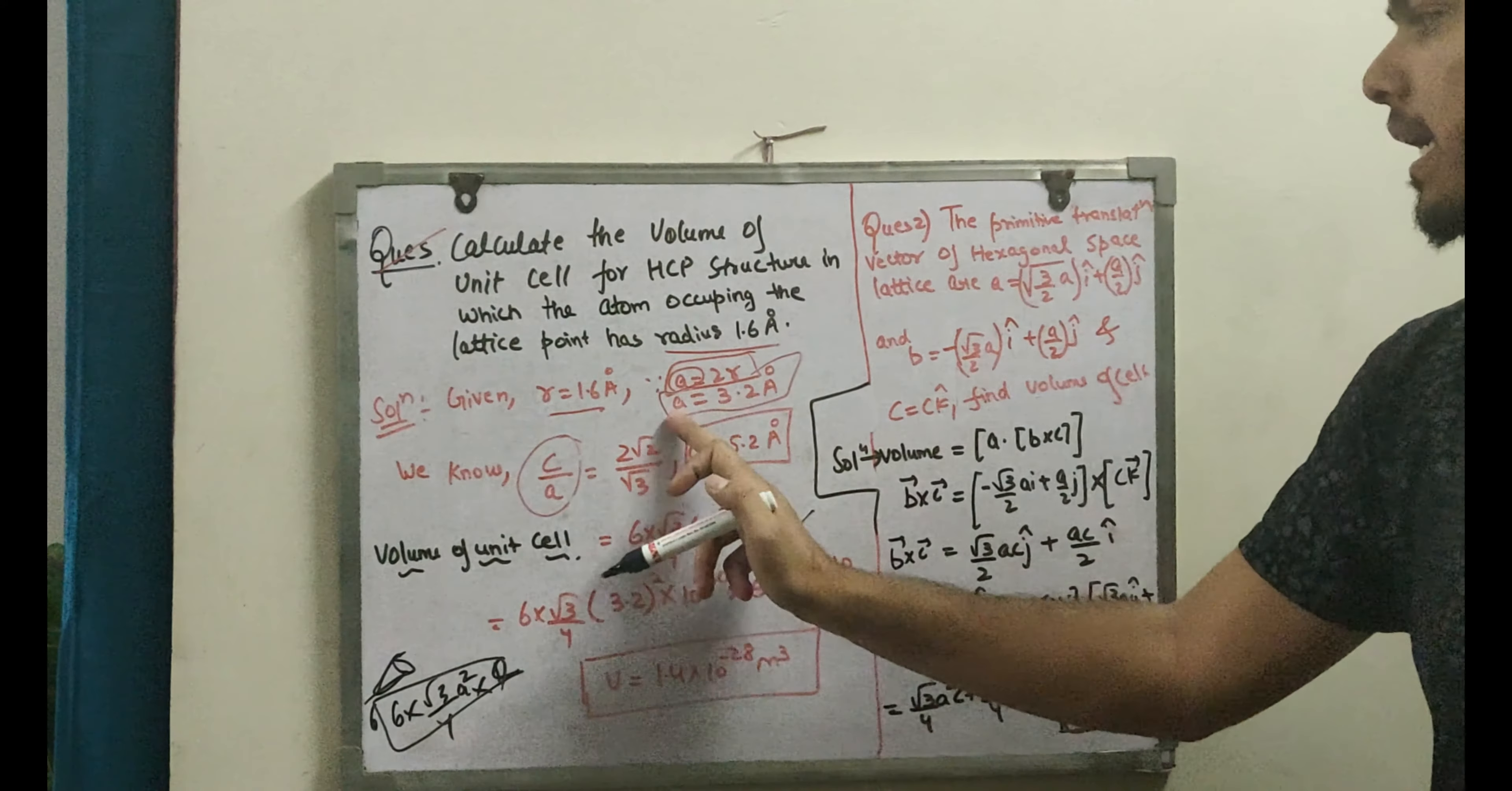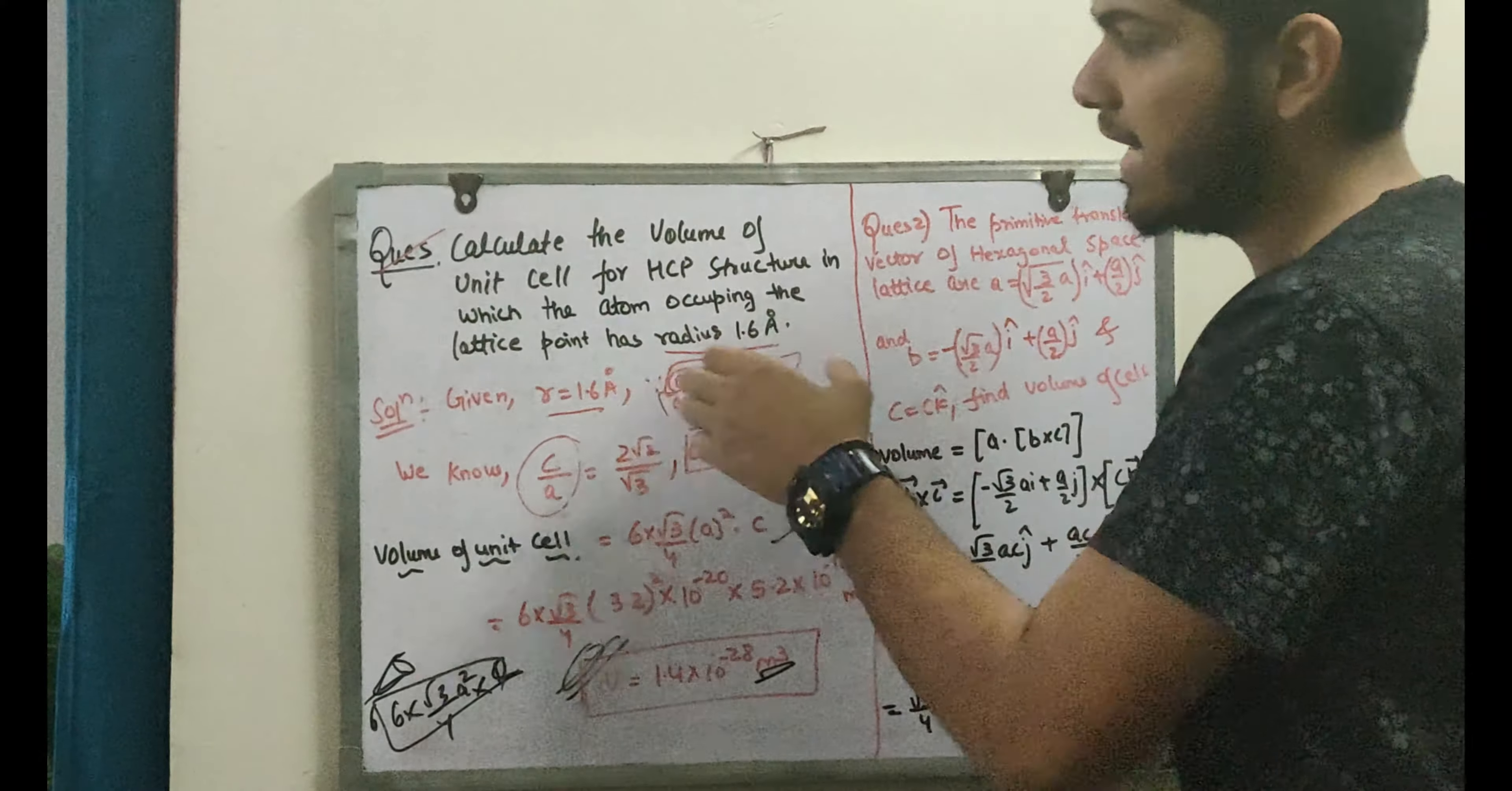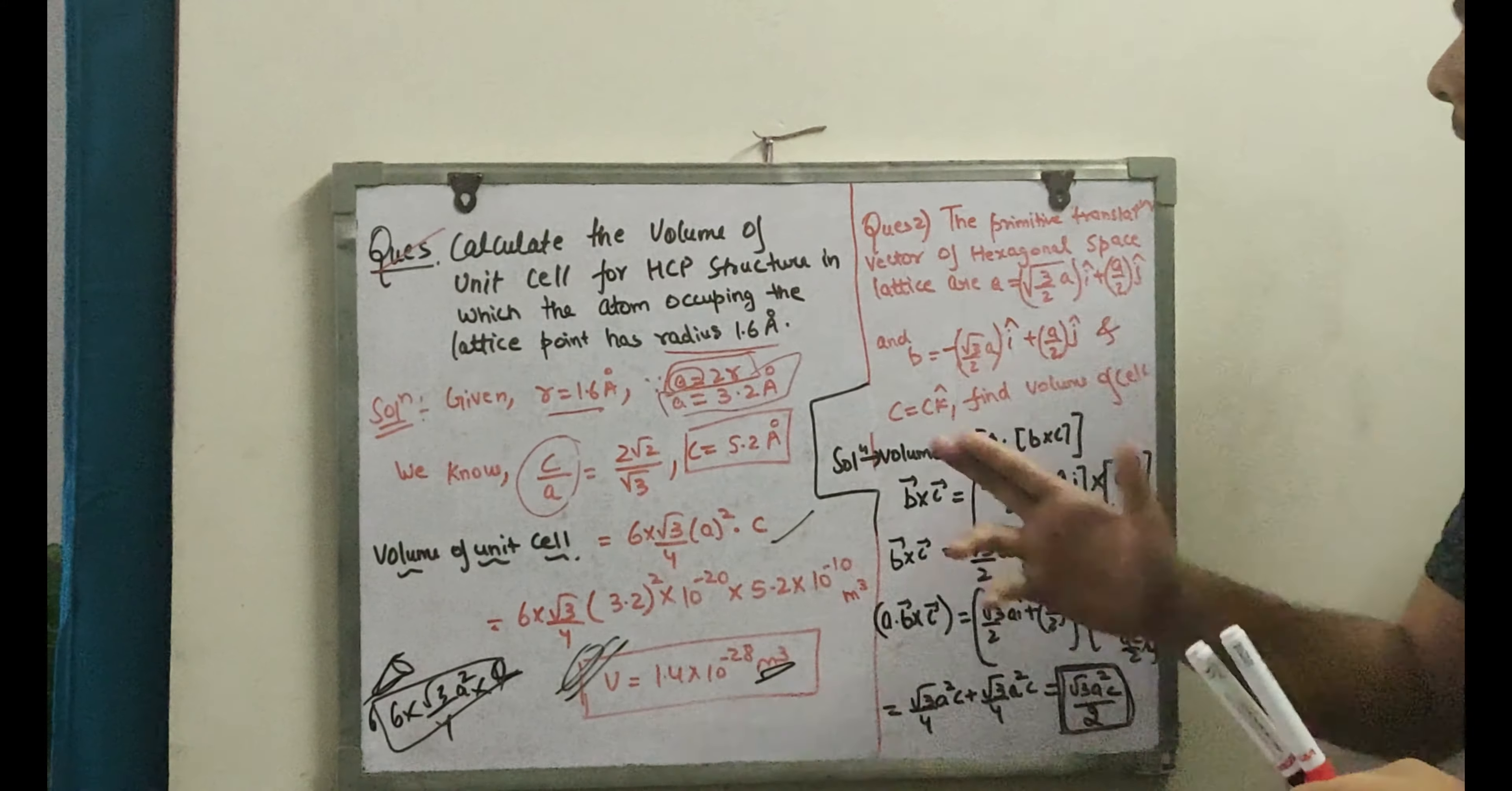I know the A value, I know C value. I have both values, so I have the volume. The volume will be in cubic units. So I hope it's clear how this question will come. It's important to know how to solve volume of HCP.